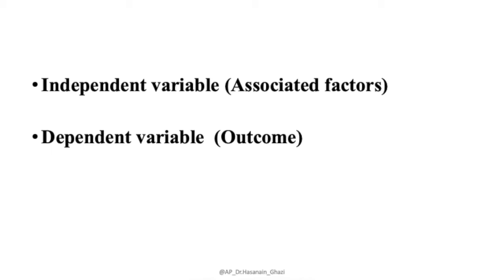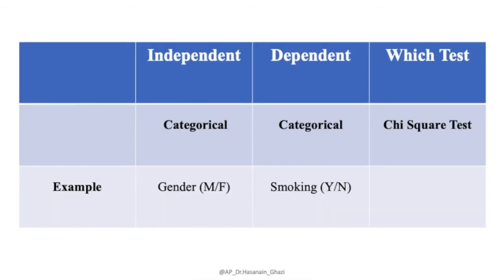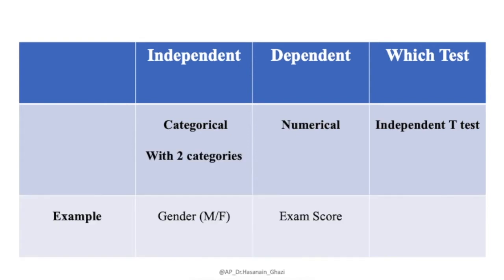Based on the independent and dependent variable types, we choose the statistical test. First, if the independent variable is categorical and the outcome is also categorical, the statistical test we use is chi-square. For example, if the independent variable is gender (male and female) and the outcome is smoking (yes and no), we use the chi-square test.